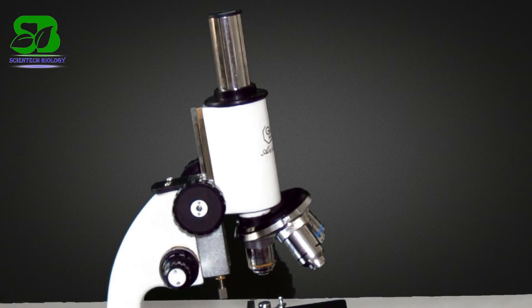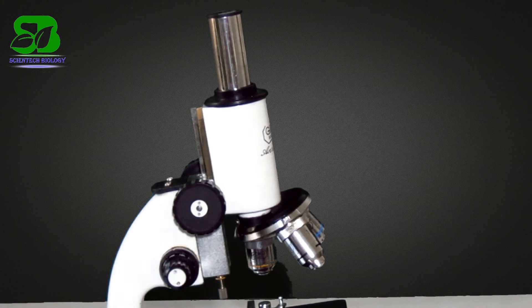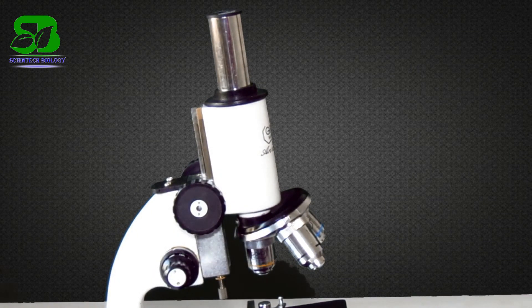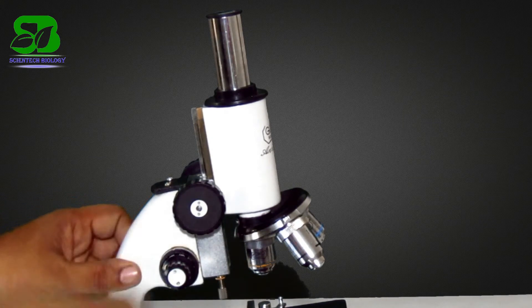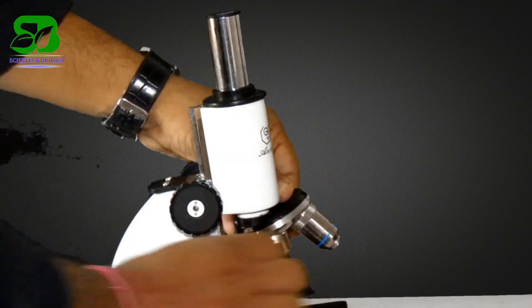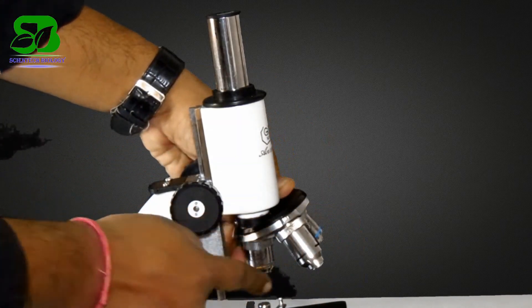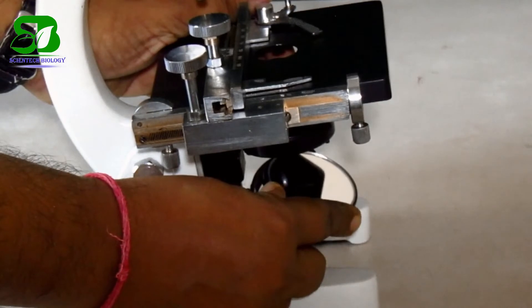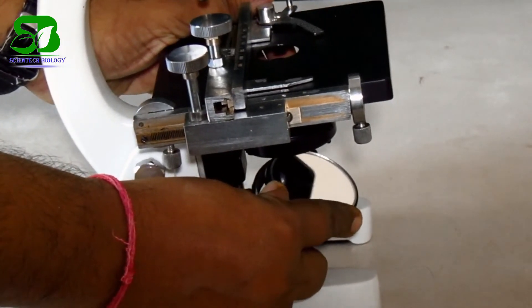Now let's see how to use this microscope to focus on slides. First, turn the nosepiece to bring the low power objective lens in line with the body tube. Now focus the mirror for maximum illumination.